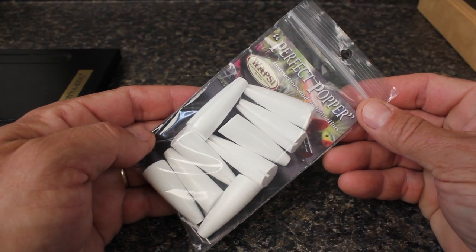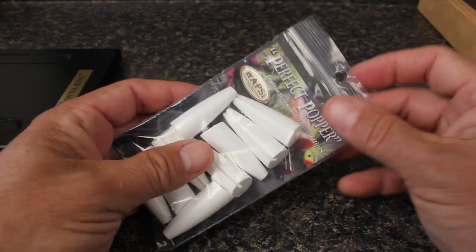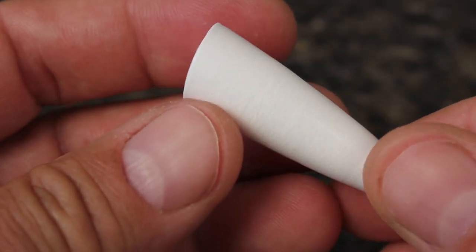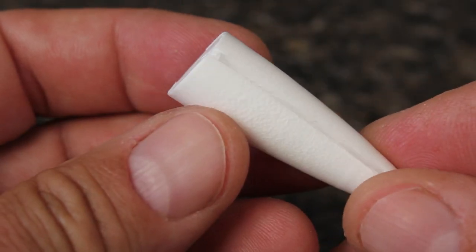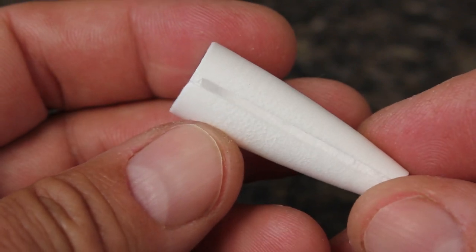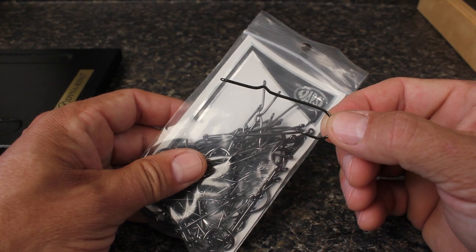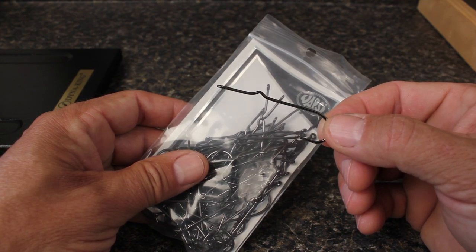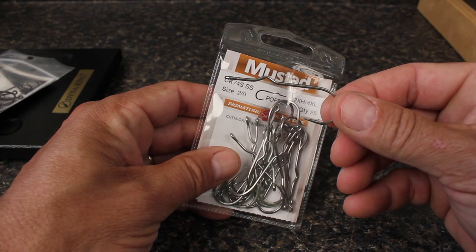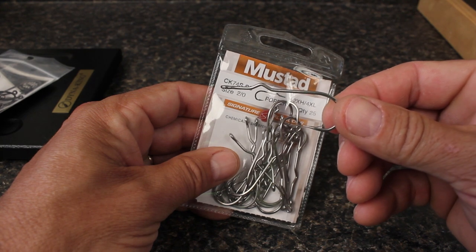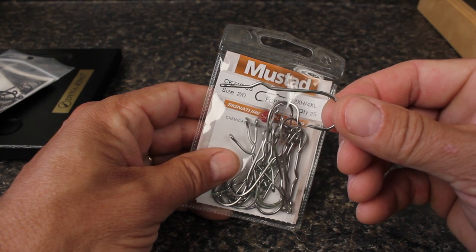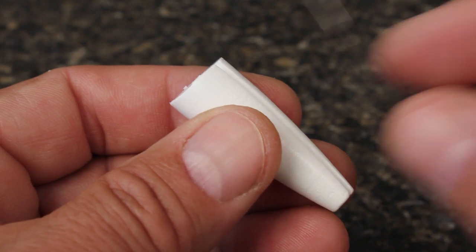I like hard styrofoam bodies such as Wapsi's perfect popper bodies. They have a hard outer coating and a channel already cut to accommodate the hook. Wapsi also has a really nice series of popper hooks that complement the bodies well. Or if you prefer, Mustad makes exceptional stainless steel popper hooks. Most all hooks meant for poppers have a kink in them to prevent the hook from rotating in the body.